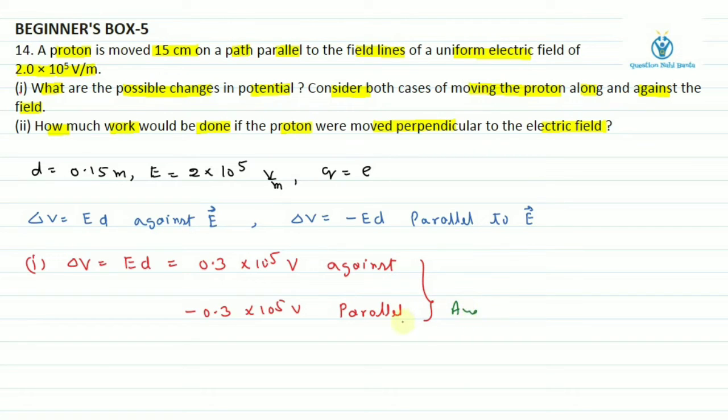Ab doosre part mein kya kaha tha hume. Doosre part mein kaha ki electric field ke perpendicular move karana hai to work done hum nikalenge kisse? Q delta v se. Yahan par hamara work done 0 aayega kyonki